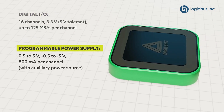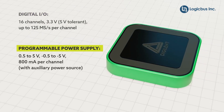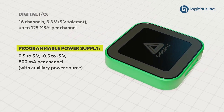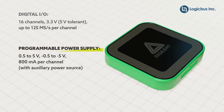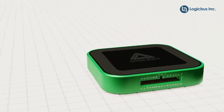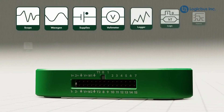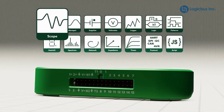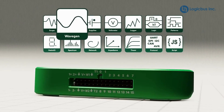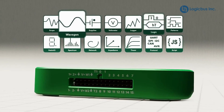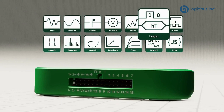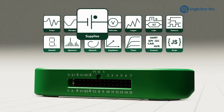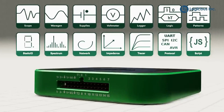It also offers two programmable power supplies that can output up to 800 milliamps each. The hardware lets you use the AD3 simultaneously as a mixed signal oscilloscope, waveform generator, logic analyzer, pattern generator, power supply, and so much more.